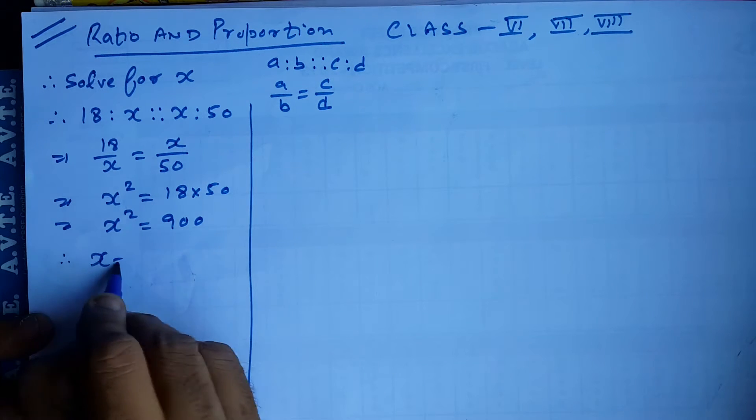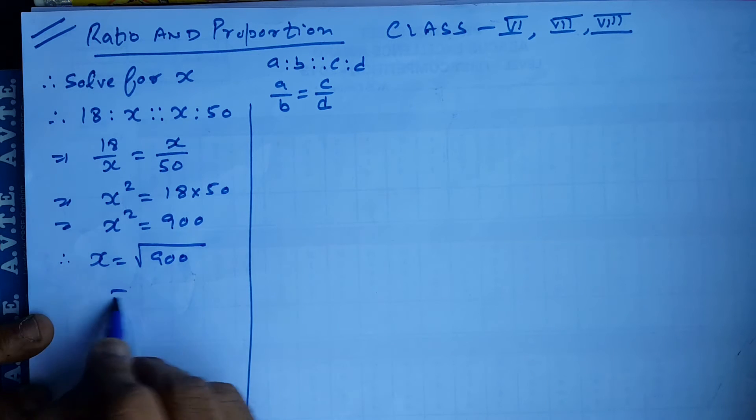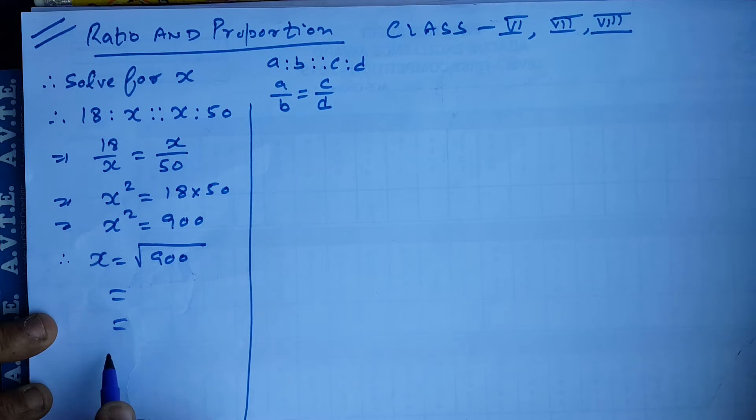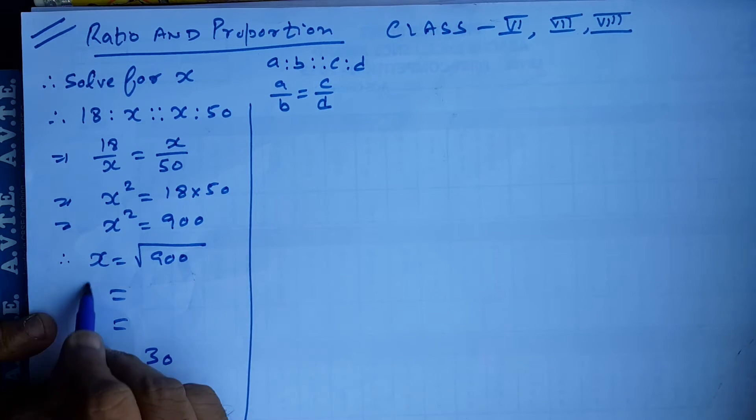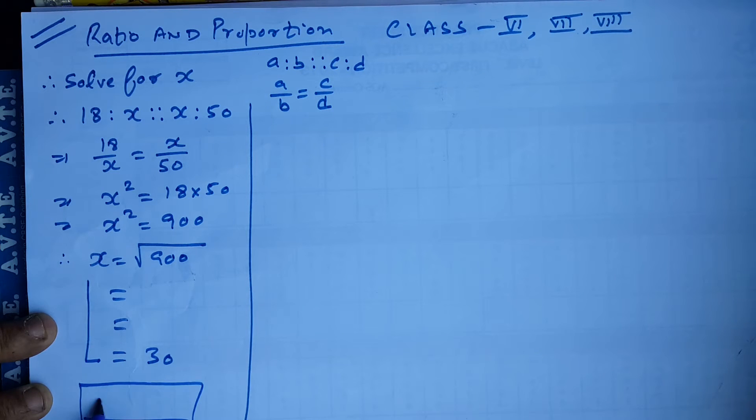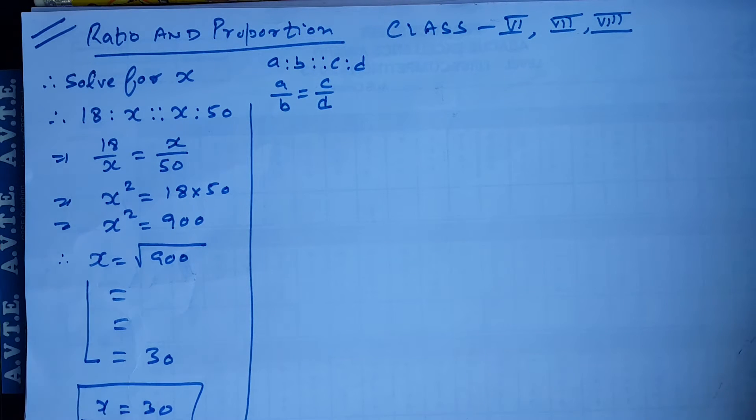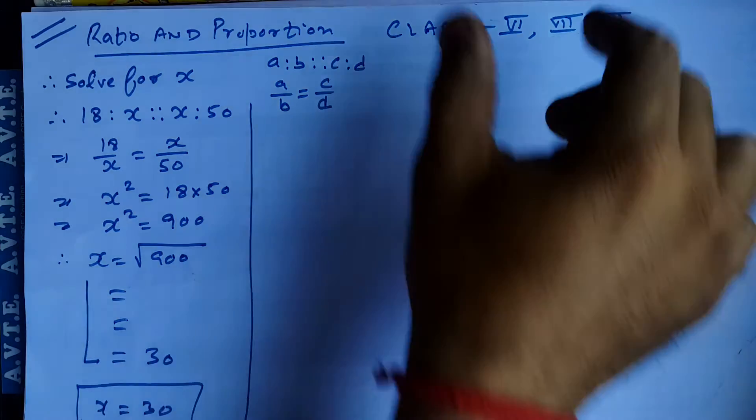Here, what is x root of 900? Everybody knows that the answer is what? 30. Okay, this is your answer x is equal to 30. So how to tell about this thing?